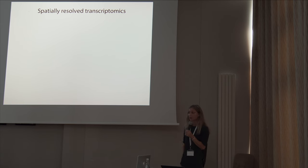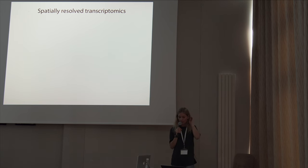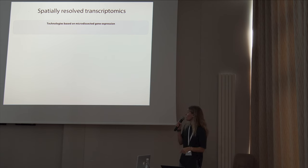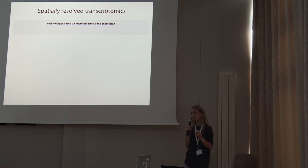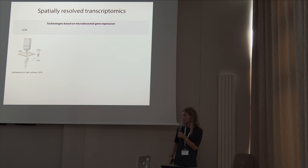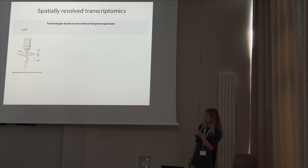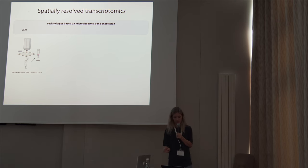There are a number of experimental and computational methods established today that aim to combine positional information with gene expression data. One way of looking at spatial gene expression is by isolating regions of interest within a particular tissue and extracting the RNA from that region to analyze it. One of these technologies is laser capture microdissection, where you use a laser beam to cut out the region of interest. It is a quite robust technology, but very laborious and not high throughput.